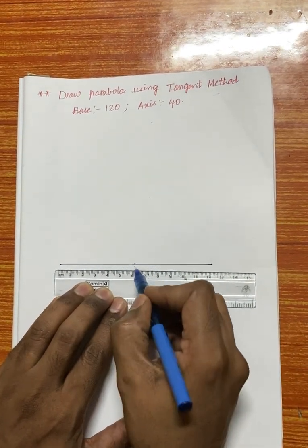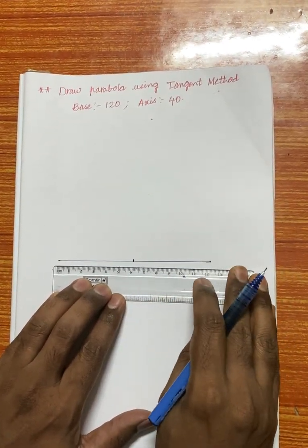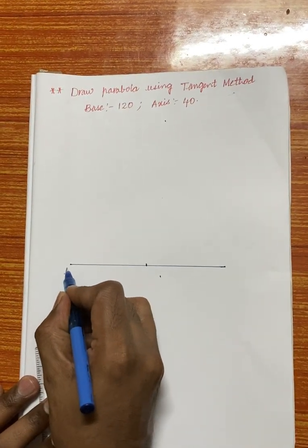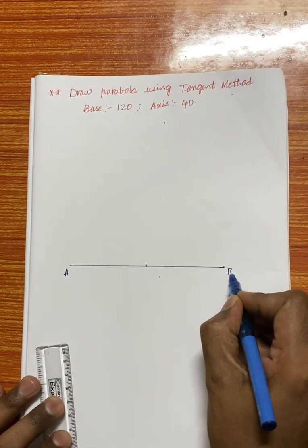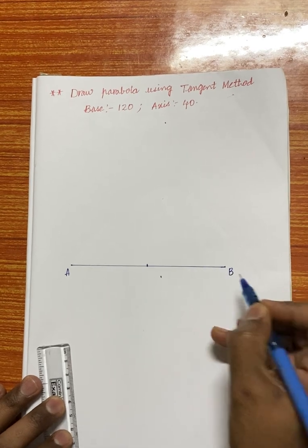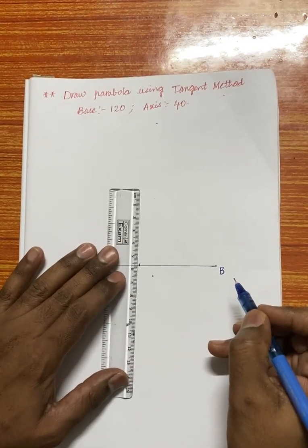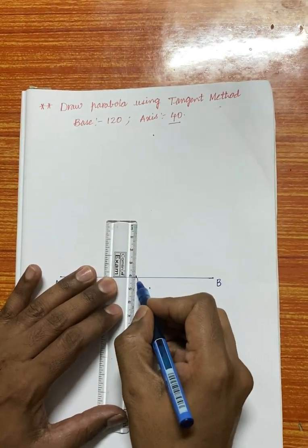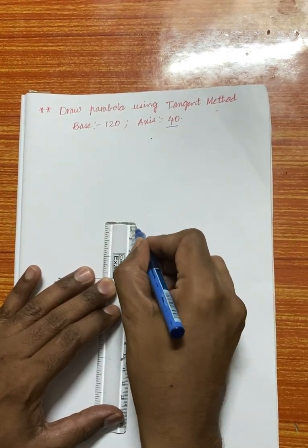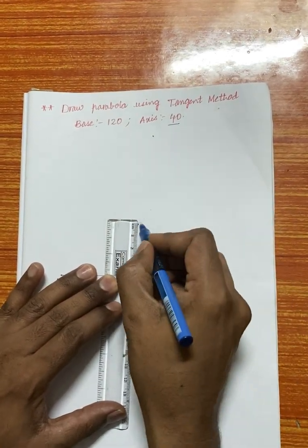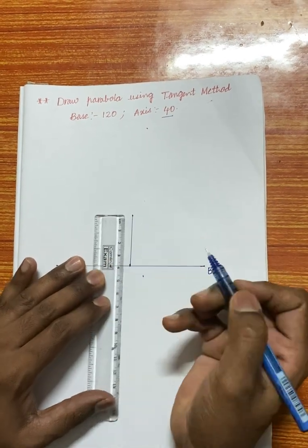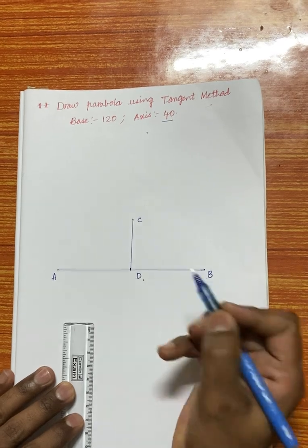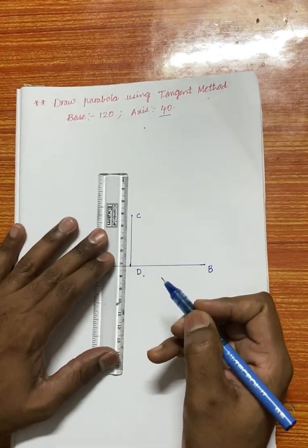In order to locate the axis, we take the center position — that is 6 centimeters from the base. From there we trace the axis. Let AB be the base and 40mm be the axis. From the center position of line AB, draw a perpendicular line using your drafter. This perpendicular line is CD.